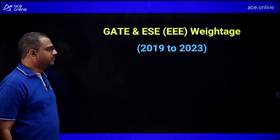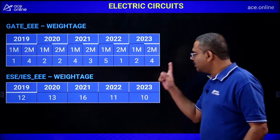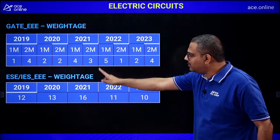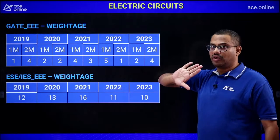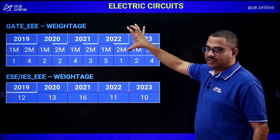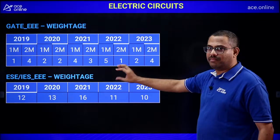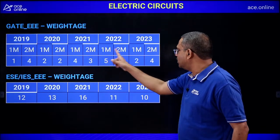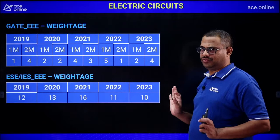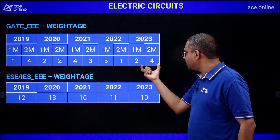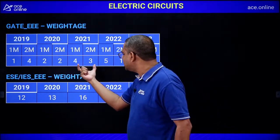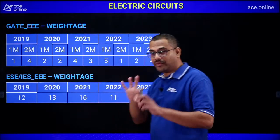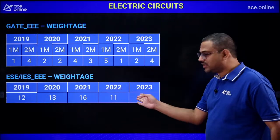Now let's look at the marks weightage. This is accurate data from 2019 to 2023 for GATE EE (Electric Circuits) and ESE Prelims for EE. For GATE EE, the subject contributes approximately 10 marks per year on average — varying between 6 to 10 marks across the years. For ESE Prelims, out of 150 bits (300 marks), my subject contributes approximately 10 to 16 questions — roughly 10 to 11 per year.